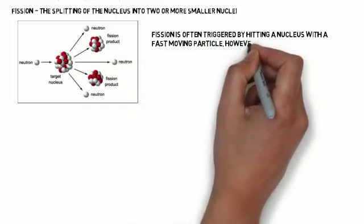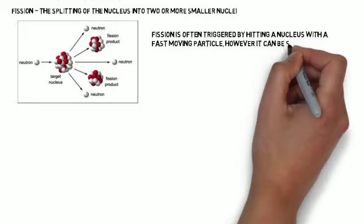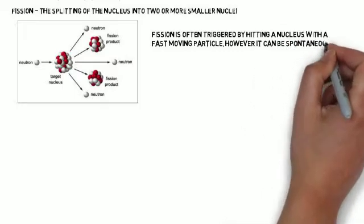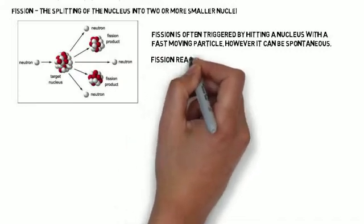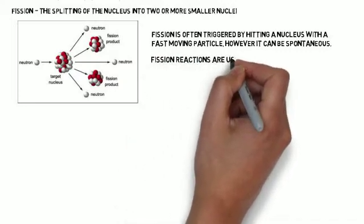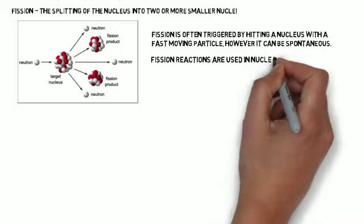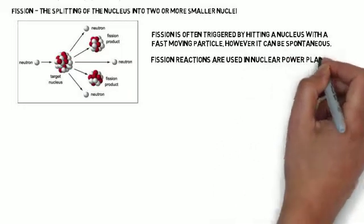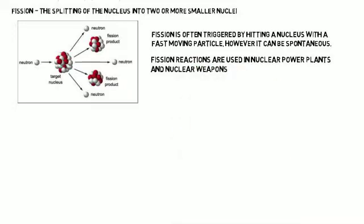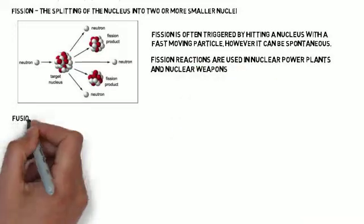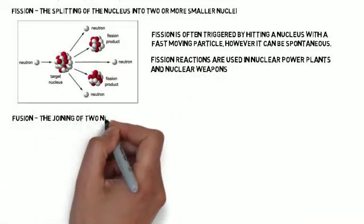There is such a thing as spontaneous fission. But for a transmutation reaction, you need that neutron to actually strike the nucleus. It's often triggered by hitting a nucleus with a fast-moving particle, but it can be spontaneous. Fission reactions are used in nuclear power plants and nuclear weapons.